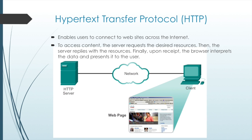To access content, web clients make connections to the server and request the desired resources. The server replies with the resources and, upon receipt, the browser interprets data and presents it to the user. Browsers can interpret and present many data types such as plain text or HTML. Other types of data, however, may require another service or program, typically referred to as plugins or add-ons.